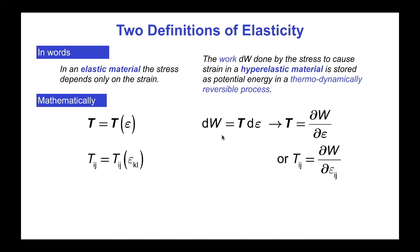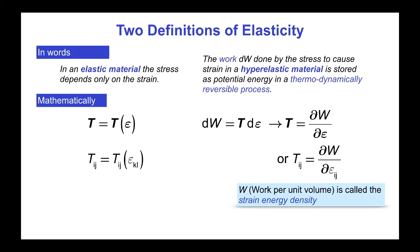The second definition is hyper-elasticity, which says that dw equals t d epsilon, or integrating this, the stress t equals del w del epsilon, or in components, tij equals del w del epsilon ij. Here w is work per unit volume, known as the strain energy density.